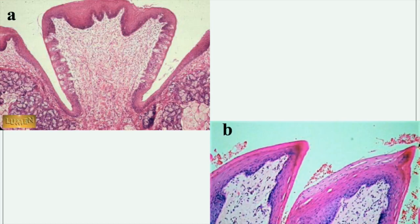The papillae in this picture are characterized by being surrounded by a groove, confirming they are circumvallate. The presence of many taste buds confirms the diagnosis, as does the presence of glands underneath. In contrast, the filiform papillus is the only type devoid of taste buds and covered with keratin.